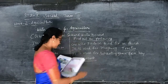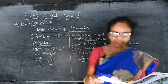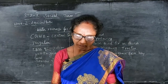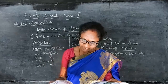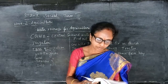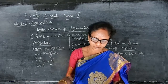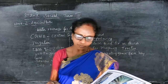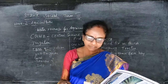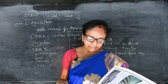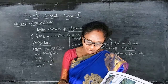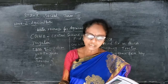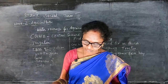Animal husbandry is the branch of agriculture that deals with raising animals for meat, milk, eggs, fur, and other products. Horticulture is the science or art of cultivating fruits, vegetables, flowers, or ornamental plants.